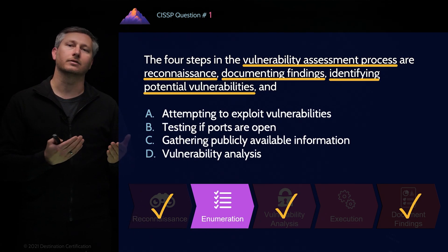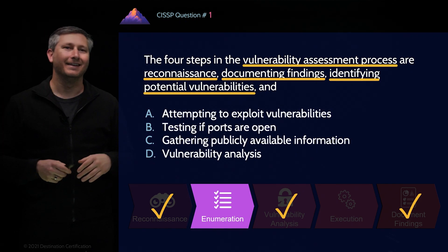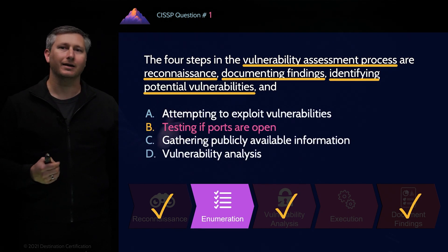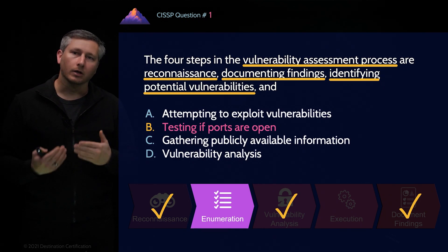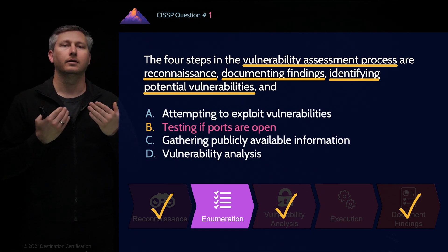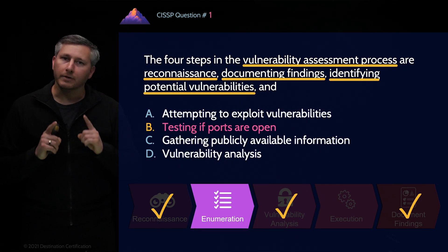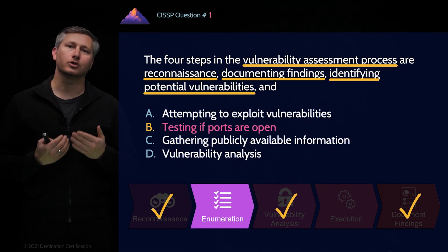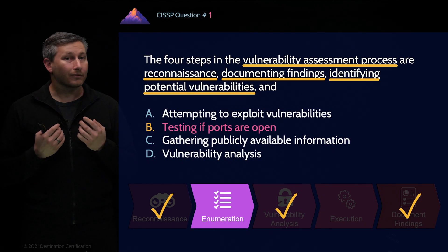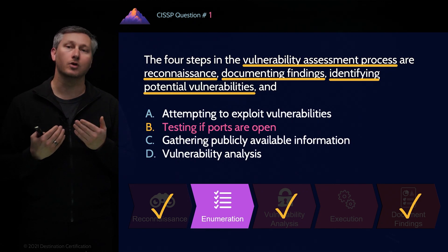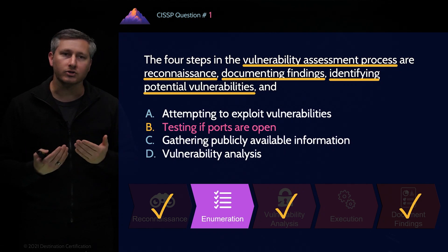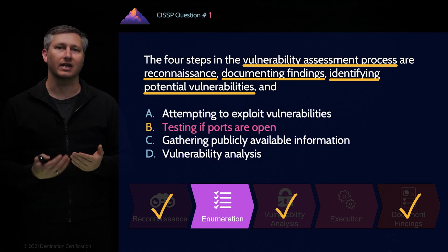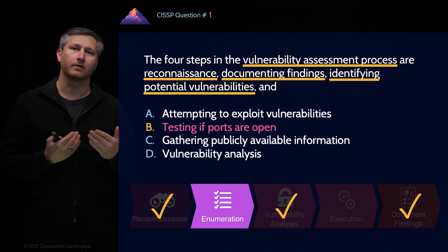That brings us to answer D: vulnerability analysis. Nope, that's not the right answer either. So that leaves us with answer B. It's not the perfect answer, but out of the listed answers, it is the best answer that most closely matches what the question is asking us for — the enumeration step. This is something very important to keep in mind for the exam: you are looking for the best answer. The exam tests your competence as a security professional, and a really good way to do that is to give a partially correct answer, just like this. You need to be able to break down a process, understand what is being done at each stage and why, and therefore pick the best answer.